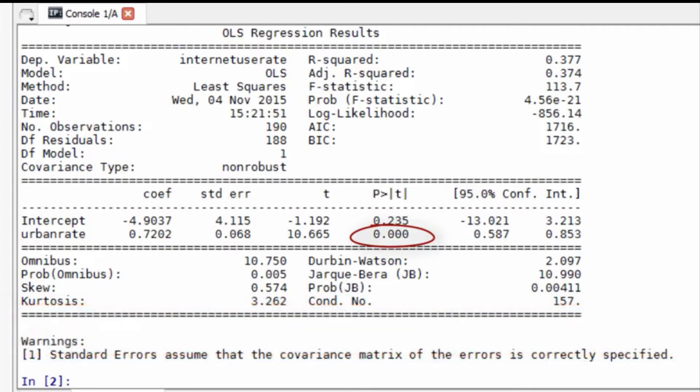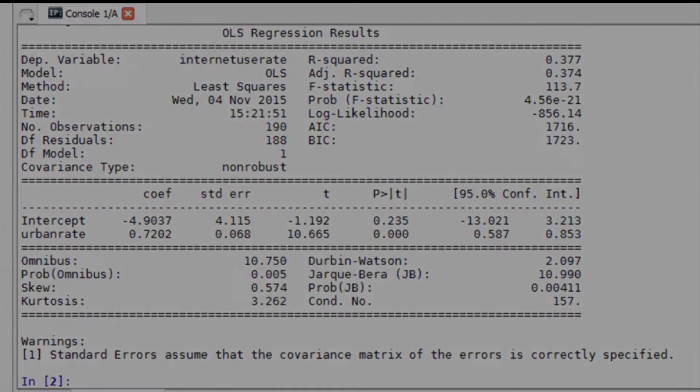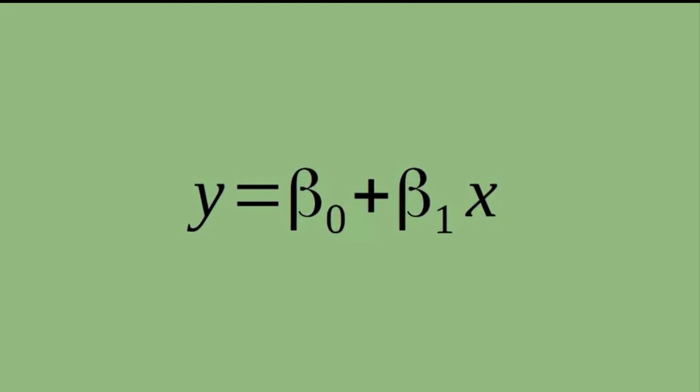The OLS function also gives an r-square value, a value that we talked about in Course 2, Data Analysis Tools, in the module on Pearson correlation. It is the proportion of the variance in the response variable that can be explained by the explanatory variable. We now know that this model accounts for about 38% of the variability we see in our response variable internet use rate.